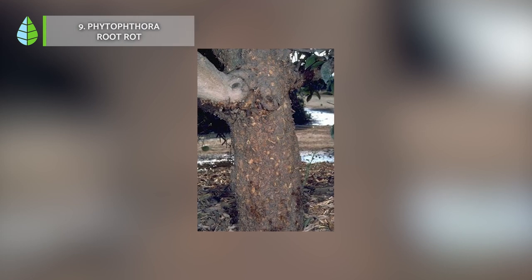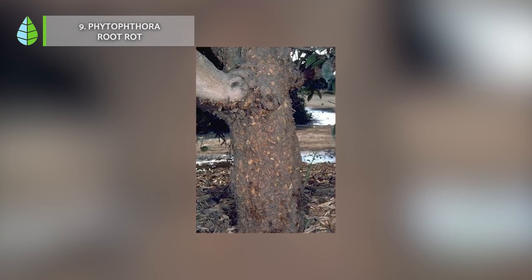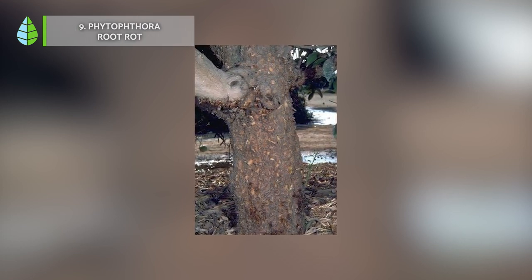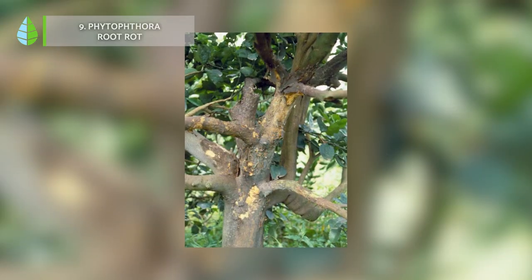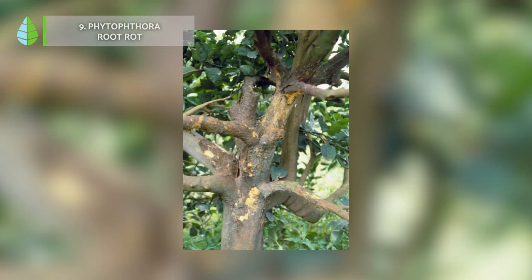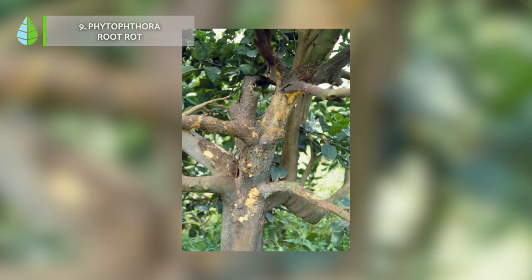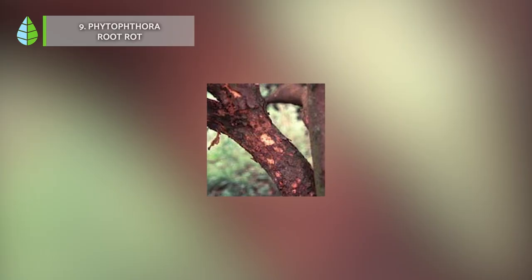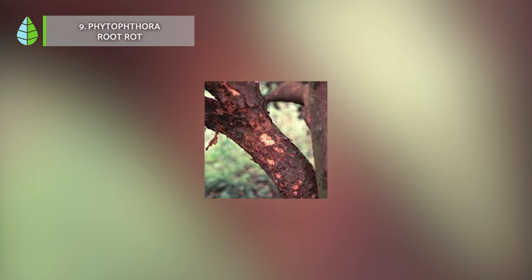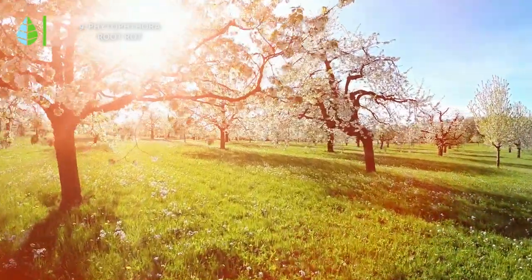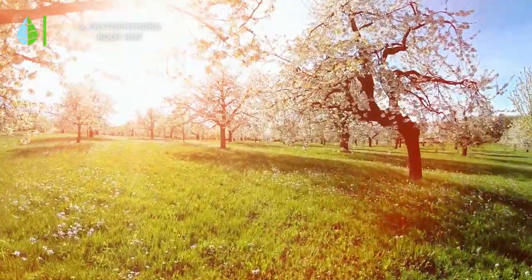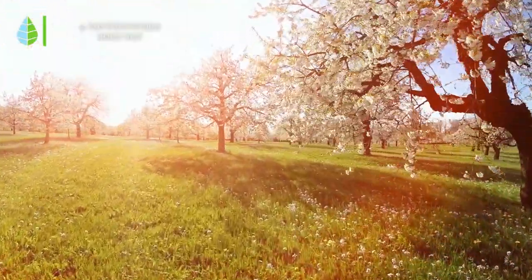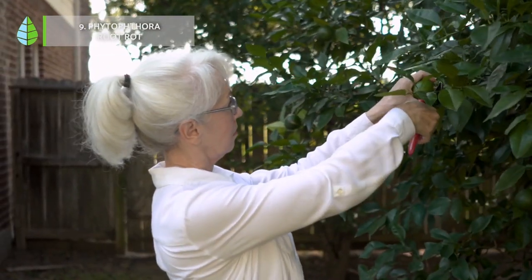Phytophthora root rot. Phytophthora root rot is a fungal disease that attacks the roots of trees, causing them to rot. This can reduce the tree's vigor and lead to gum masses on the trunk and branches. Proper drainage and management practices are essential for prevention. In severe cases, fungicides specifically designed to control this disease may be necessary.